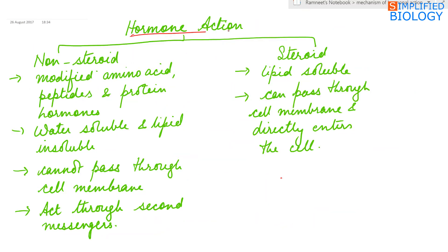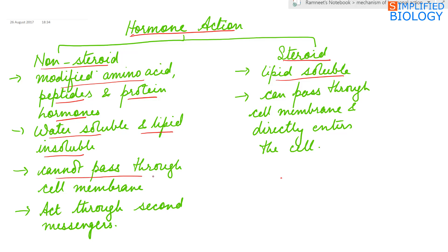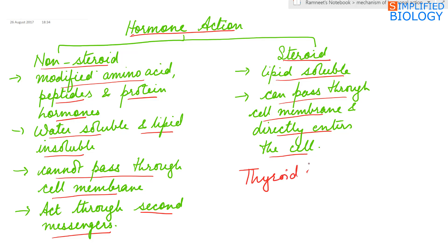Hormone action can be divided into two types: the non-steroid and the steroid types. Non-steroid hormones are modified amino acids, peptides and protein hormones, while the steroid ones are the lipid-soluble hormones. Non-steroid hormones are water-soluble and hence lipid-insoluble. As they are lipid-insoluble, they cannot pass through the cell membrane, hence they act through second messengers. Steroid hormones are lipid-soluble and can pass through the cell membrane, directly entering the cell. The only exception being thyroid hormones, which are amino acid derivatives but are lipid-soluble.